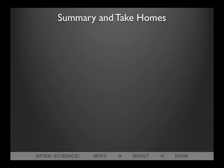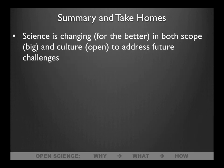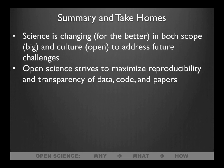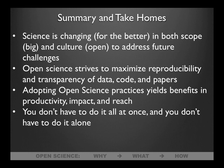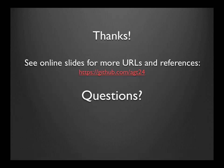Summary and take-homes: Science is changing — hopefully for the better — in both scope and culture, becoming bigger and more open to address future challenges. Open science strives to maximize reproducibility and transparency of data, code, and papers. Adopting open science practices yields benefits in productivity, impact, and reach — more people will read your papers if they are open. You don't have to do it all, you don't have to do it all at once, and you don't have to do it alone. I'll put these slides online so you can look up all the URLs.